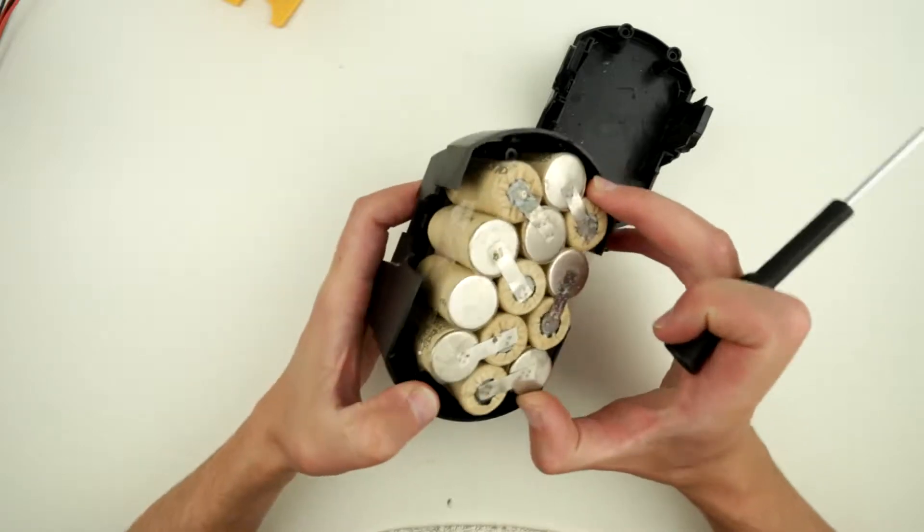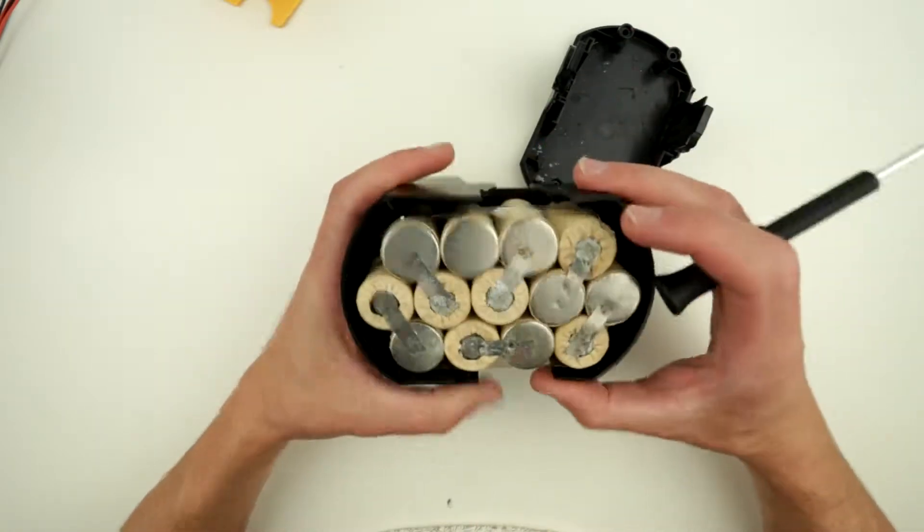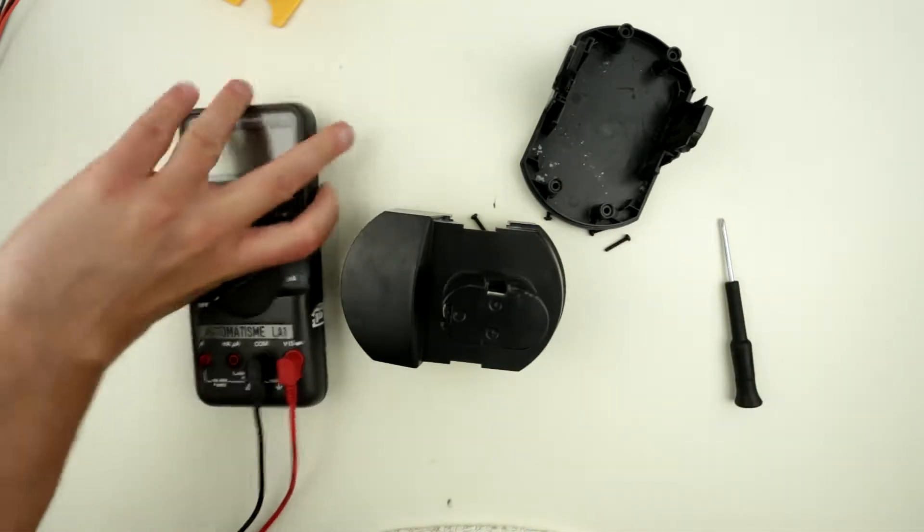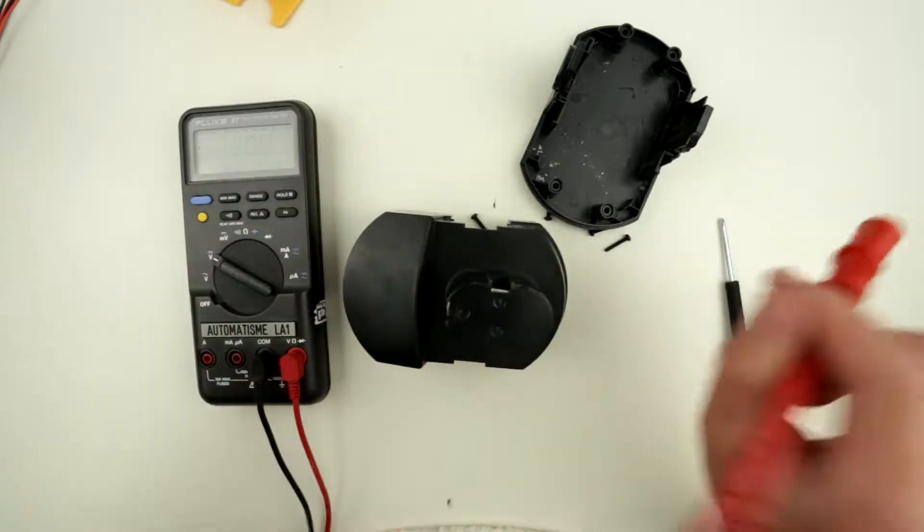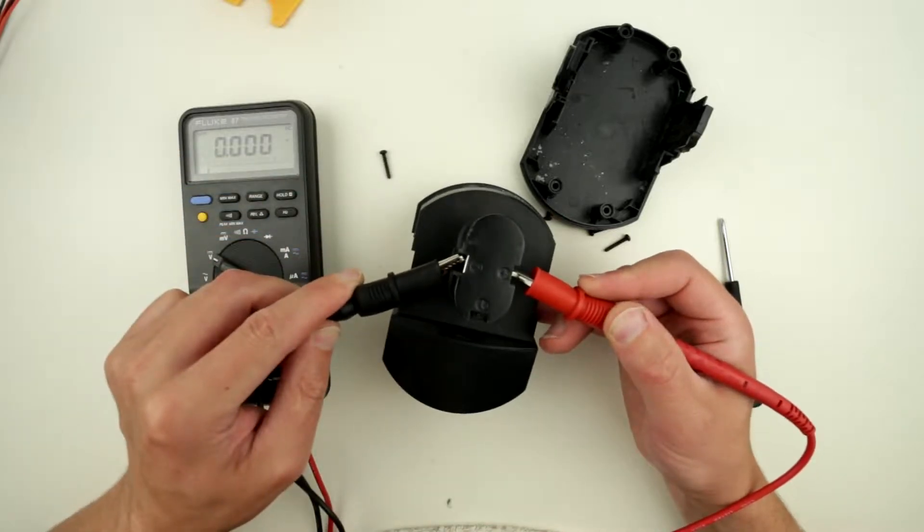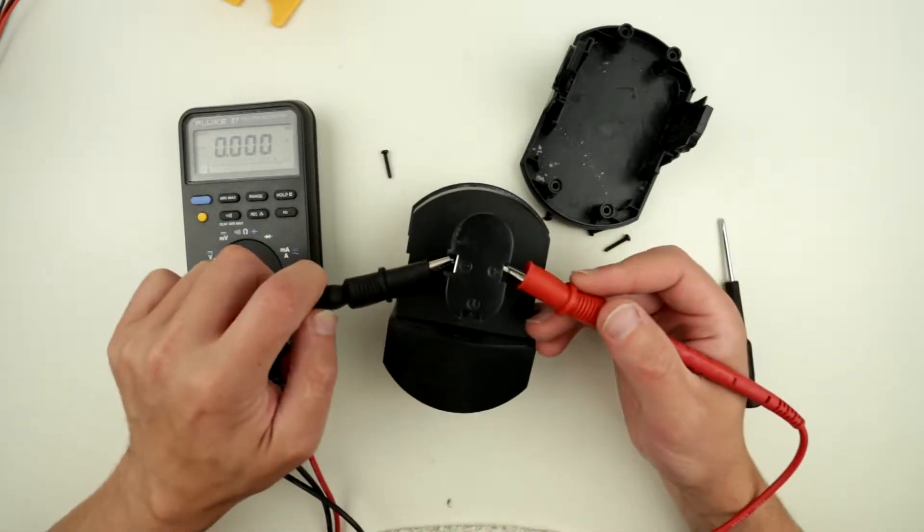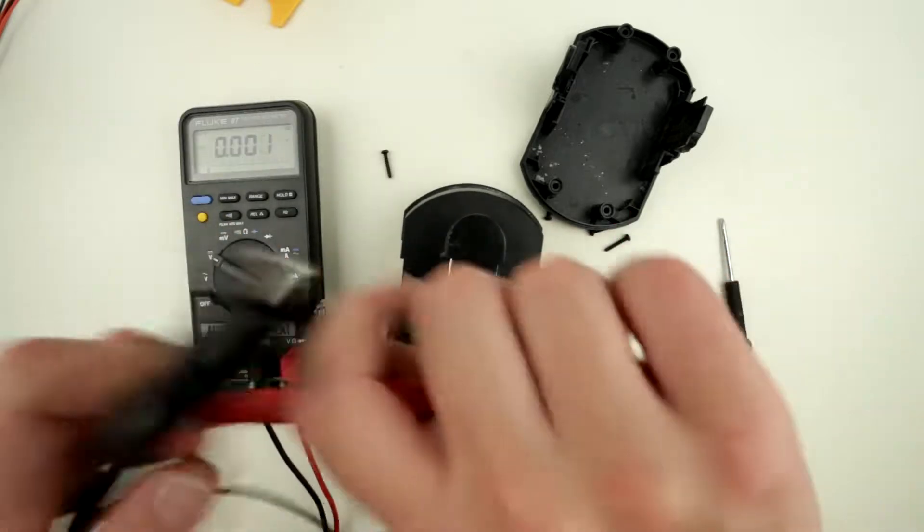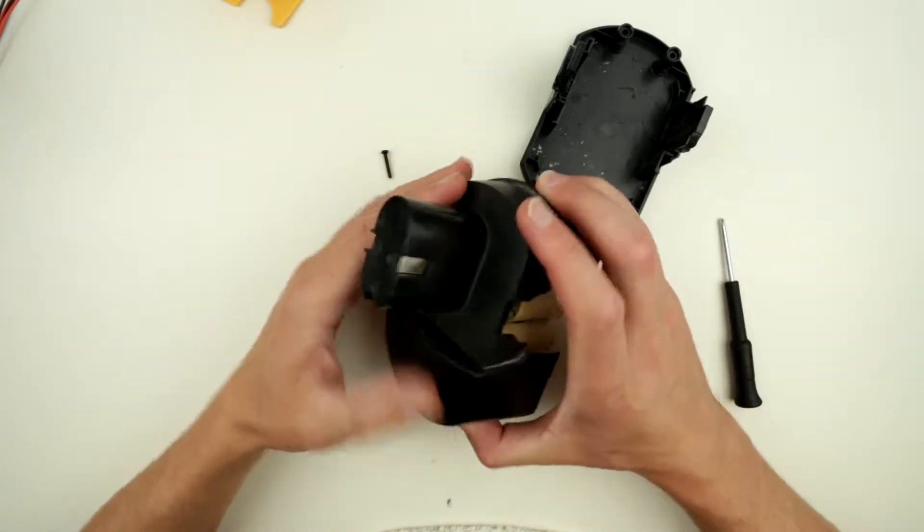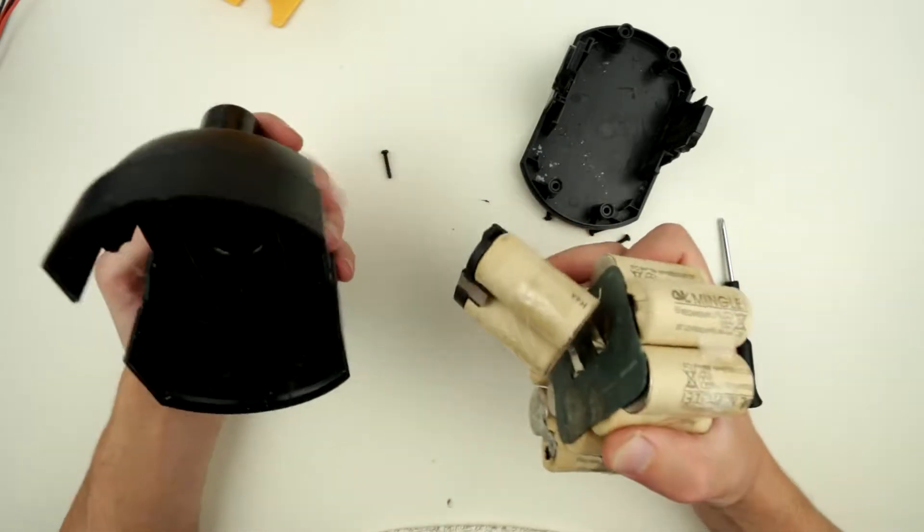So 15 in total. 1.2 volts by 15 would be around 18 volts. Curious if there is any sort of voltage on this thing, because I tried to charge it and didn't get anything. I just replaced the battery in my multimeter, let's see what it reads. Seriously? It's nothing. Yeah, it's definitely garbage.